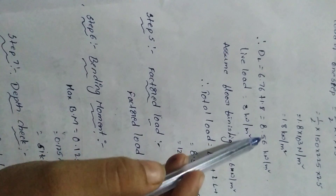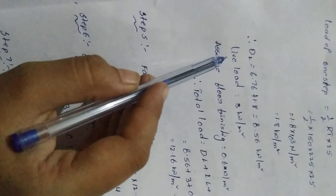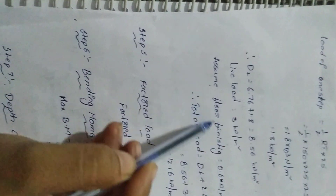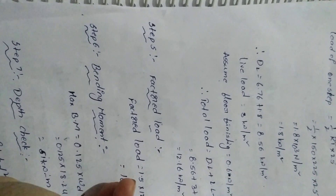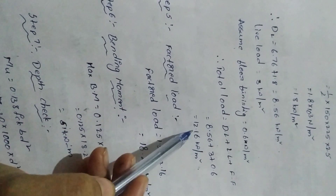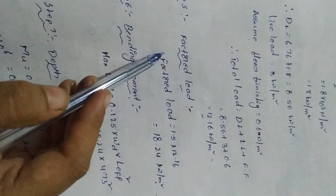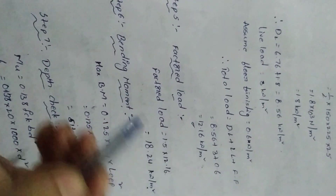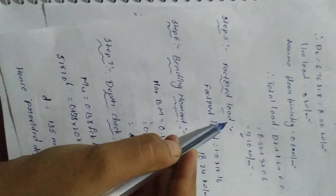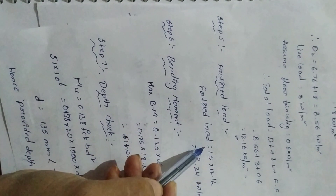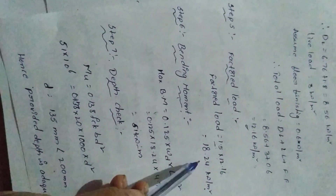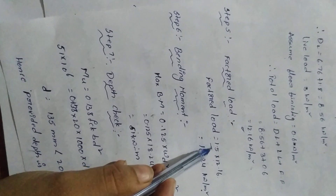Dead load equals 6.76 plus 1.8 = 8.56 kN/m². Live load is 3 kN/m² (given). Assumed floor finishing load is 0.6 kN/m². Total load equals dead load plus live load plus floor finishing = 12.16 kN/m². Factored load equals factor of safety 1.5 multiplied by total load.